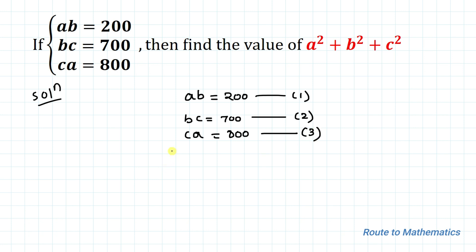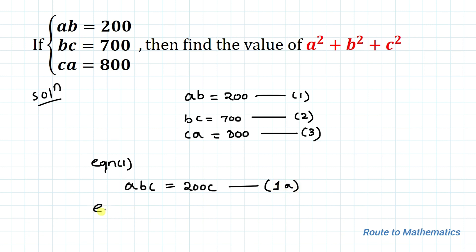Notice that in each equation one variable is missing. We'll multiply that missing variable on both sides. In equation 1, the missing variable is c, so multiplying both sides by c gives abc = 200c — call this equation 1a. In equation 2, the missing variable is a, so multiplying both sides by a gives abc = 700a — call this equation 2a.